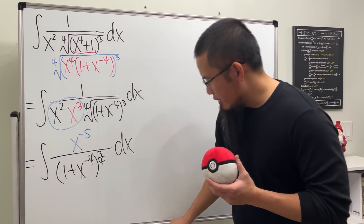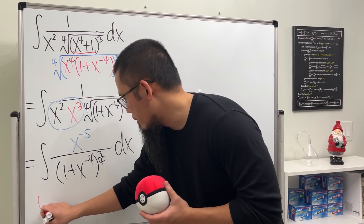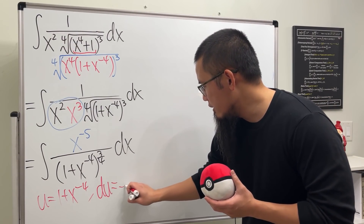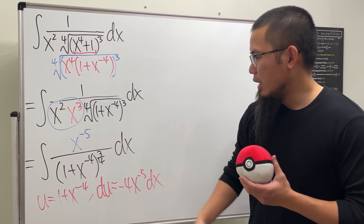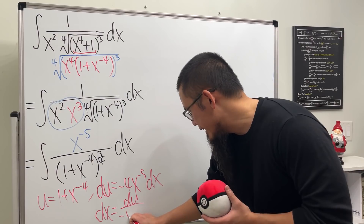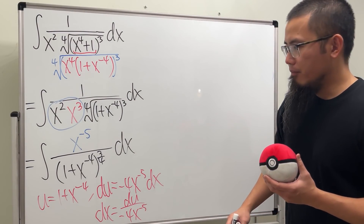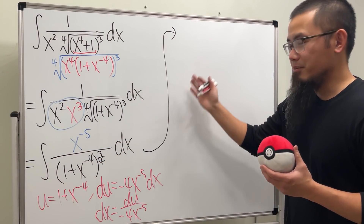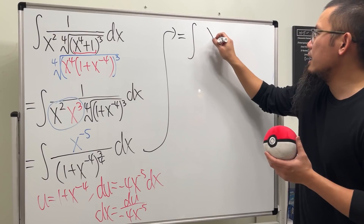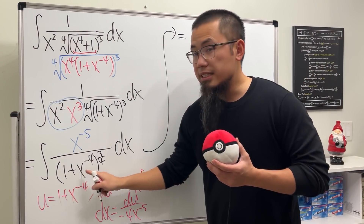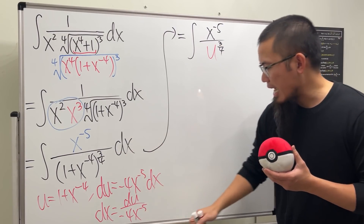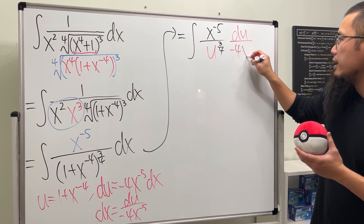Now we can do u-substitution. Let u equal the inside: u equals one plus x to the negative four. Then du equals negative four times x to the negative five, dx. Isolating dx gives us dx equals du over negative four x to the negative five. Substituting back, we have the integral of x to the negative five over u to the three-fourths power, with dx replaced by du over negative four x to the negative five.